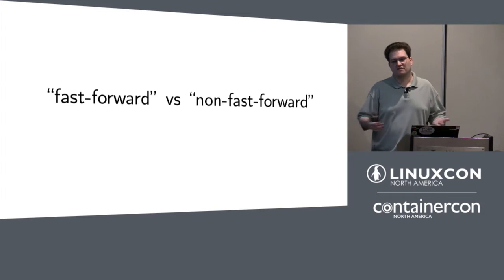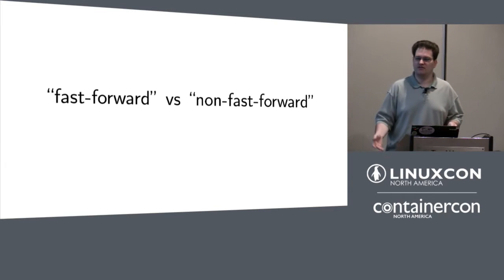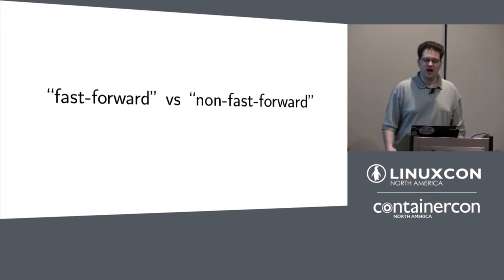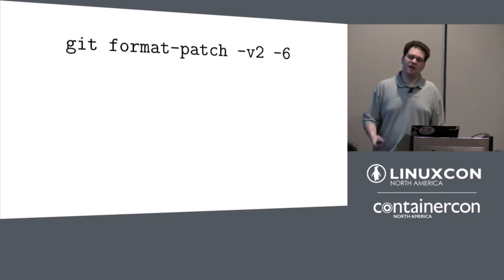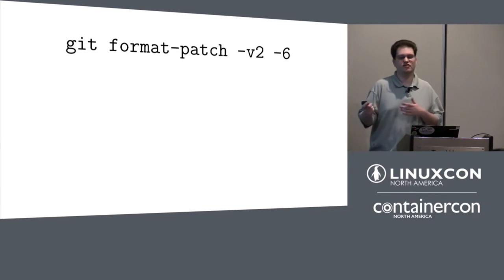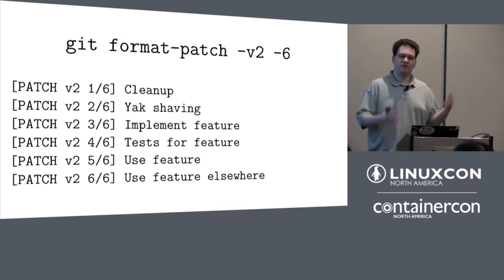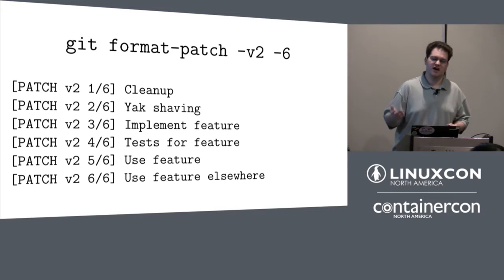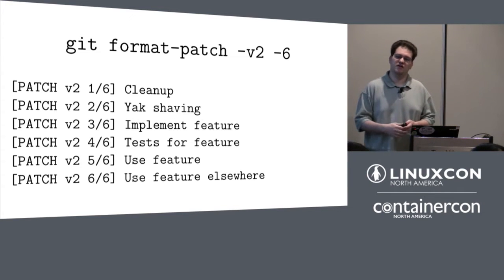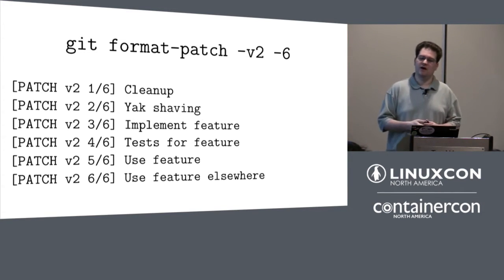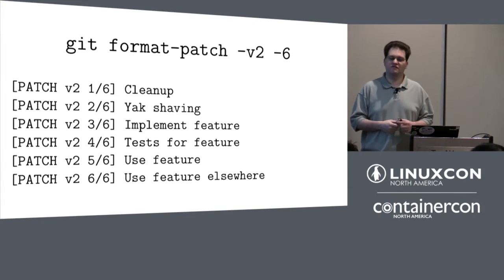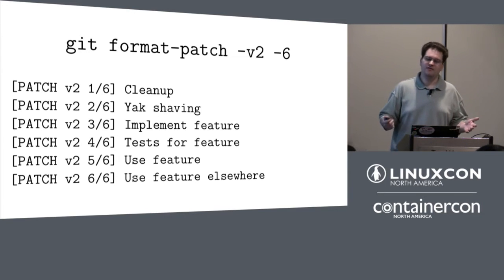You've done this non-fast-forwarding step, run rebase -i, rearranged the patch series, and now you have Git Format Patch Version 2 with six patches. You've got the separated cleanup and yak shaving, the fixed typo, the benchmark, the tests, and multiple uses of the feature — a version that people might be willing to merge. Development proceeds from there — maybe you have to do a v3, v4, v5. But what happened to version 1? Did you save a copy of it anywhere?